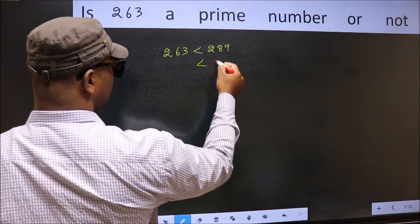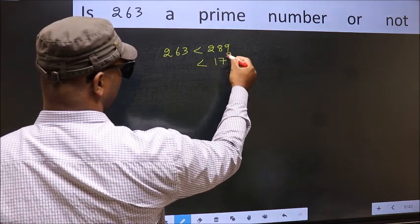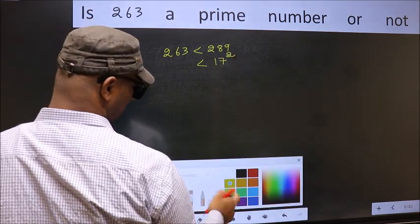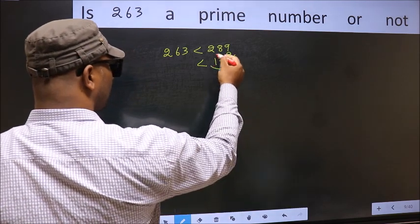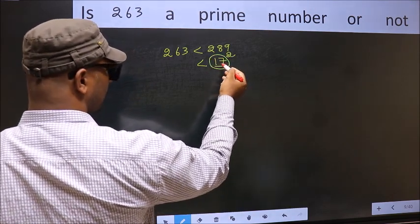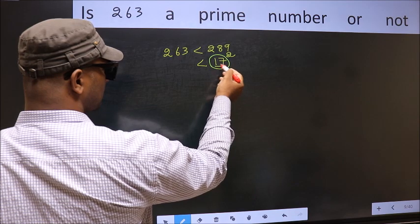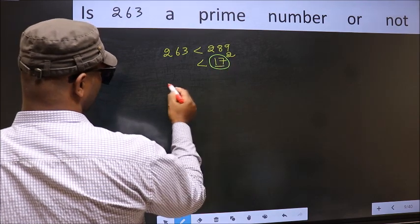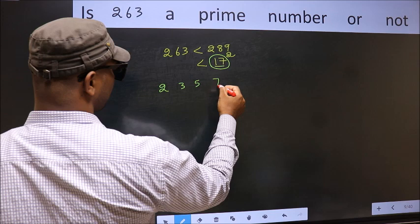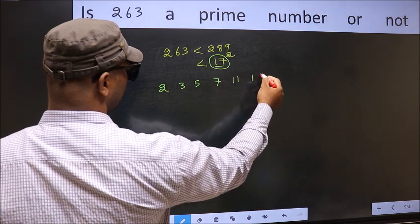Next, 289 is nothing but 17 squared. Now, for this number 17, write all the prime numbers less than this. They are 2, 3, 5, 7, 11, and 13.